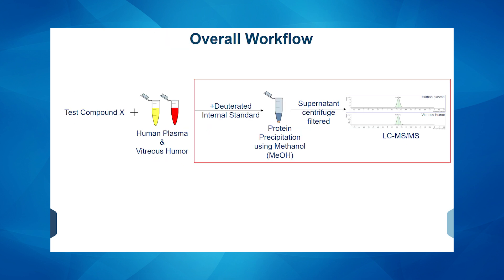Now let's look at the overall workflow. Starting with test compound X, which is spiked in human plasma and vitreous humor, then moving on to the addition of the internal standard and protein precipitation using methanol. After centrifuging, take your supernatant and run LC-MS/MS analysis on it.